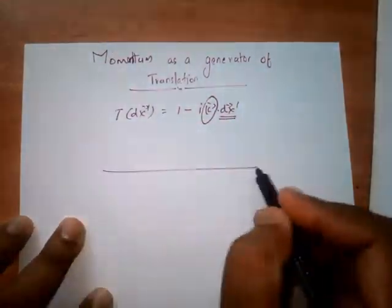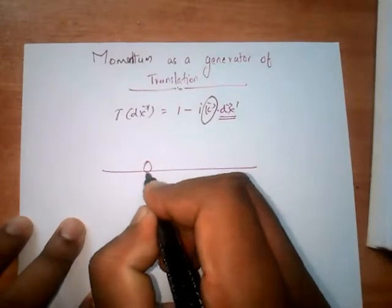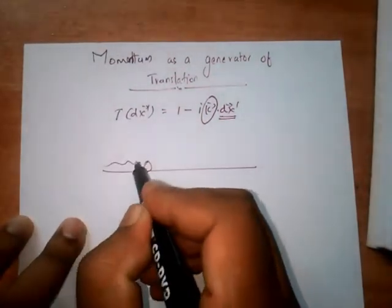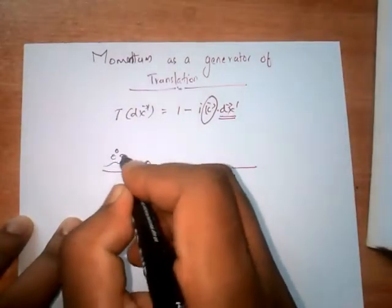Let a particle is at position x. As a part of our observation, we are sending some radiations or beam of electrons into it.